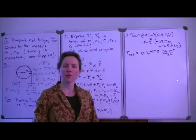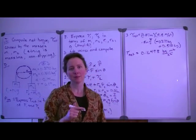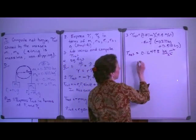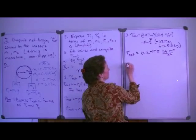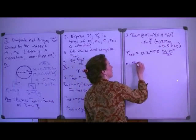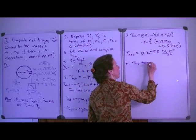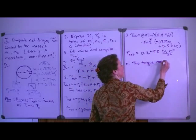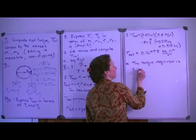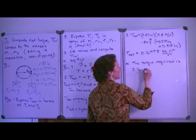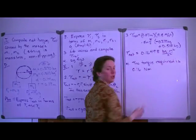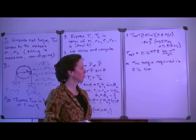But recall that the definition of a Newton is a kilogram times meters over seconds squared. So this is equivalent to saying, and we'll express it when we express our answer to two significant figures. So the torque required to keep the pulley from rotating is about 0.16, and now we can say Newtons times meters, because we'll have a single term of meters left over there.